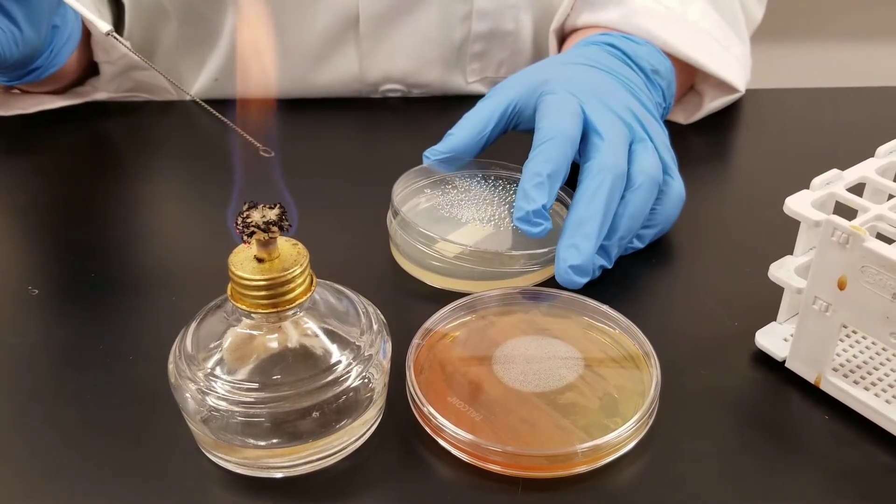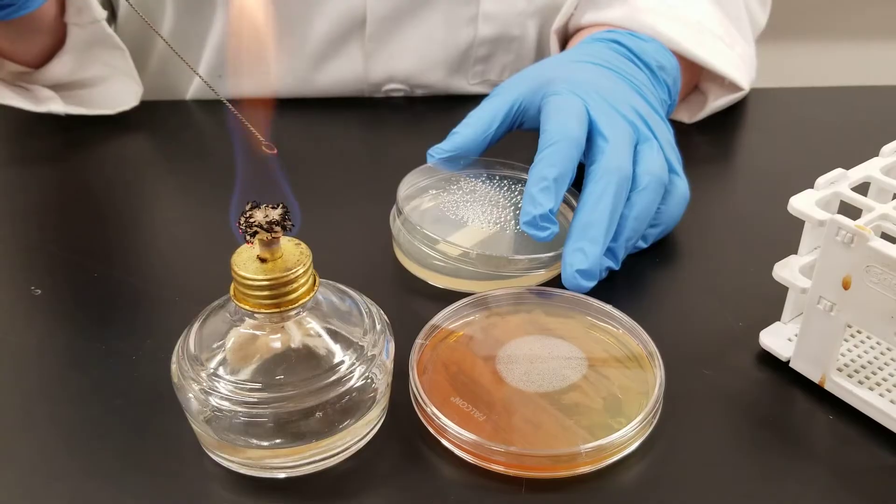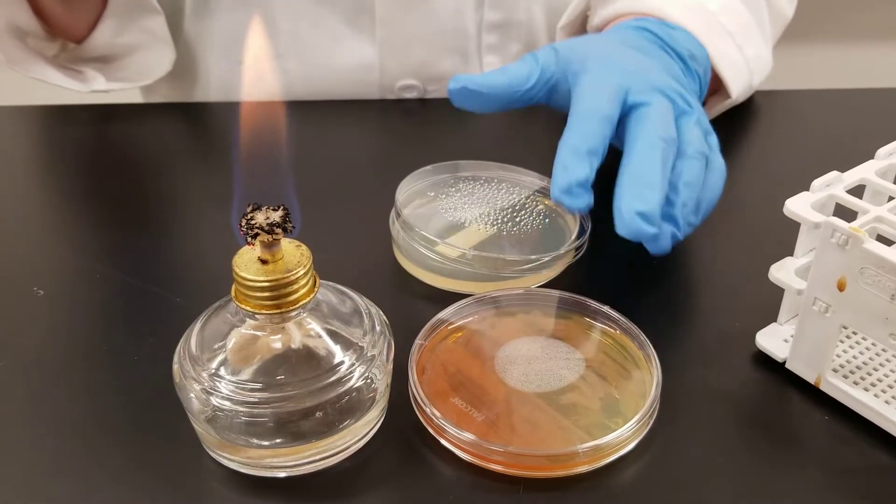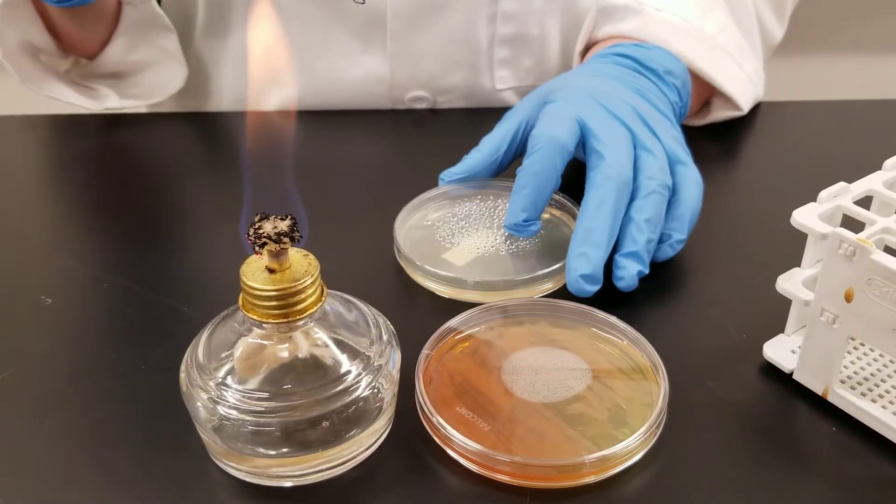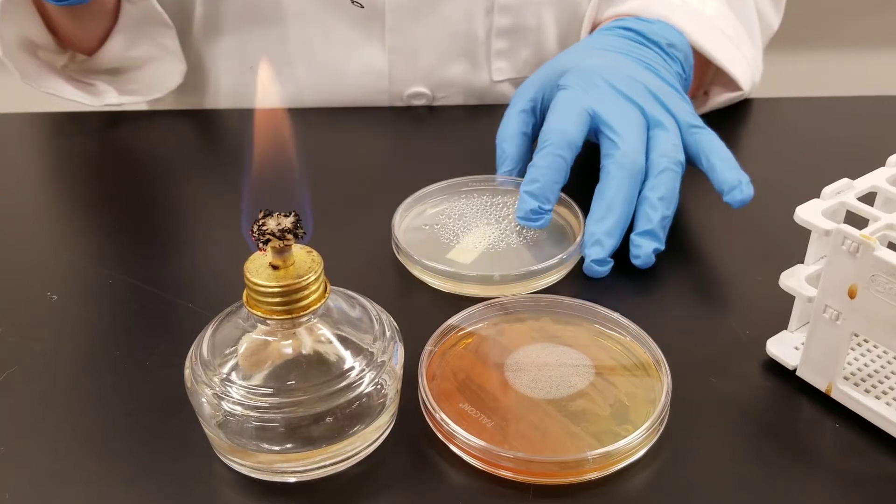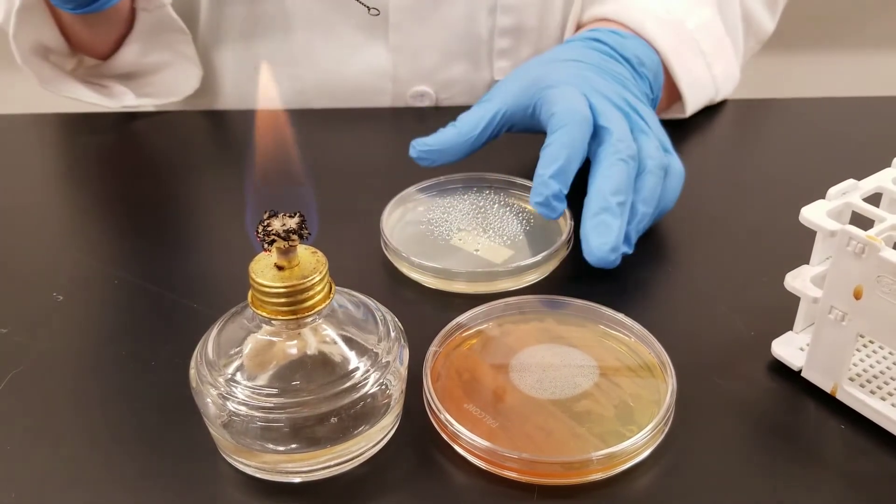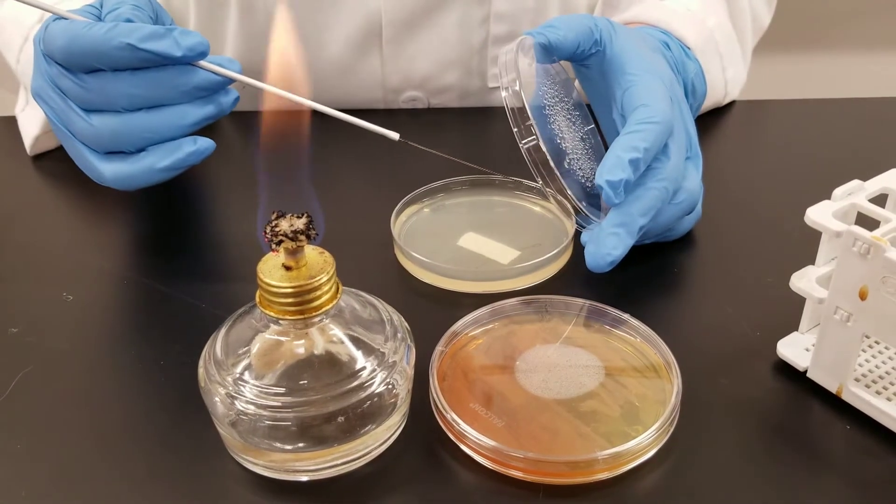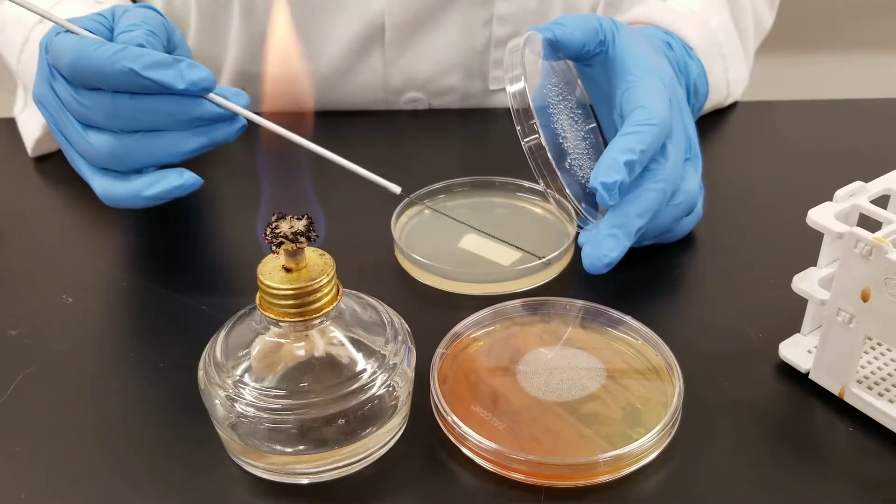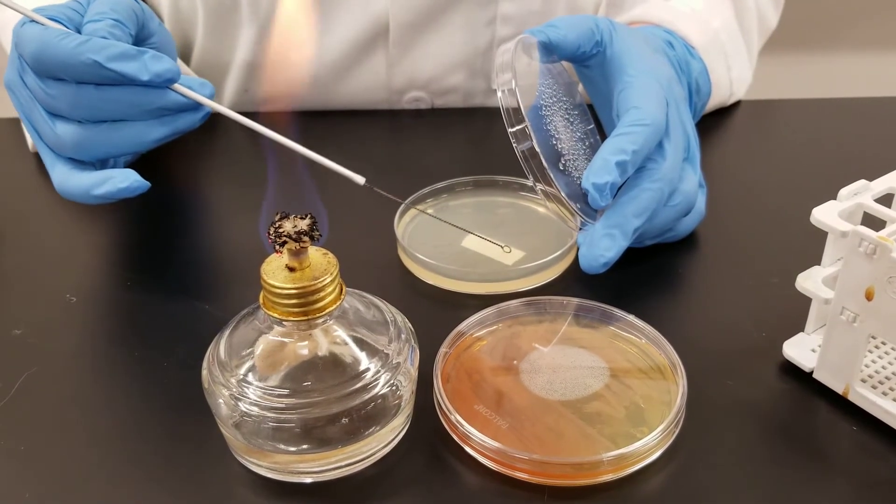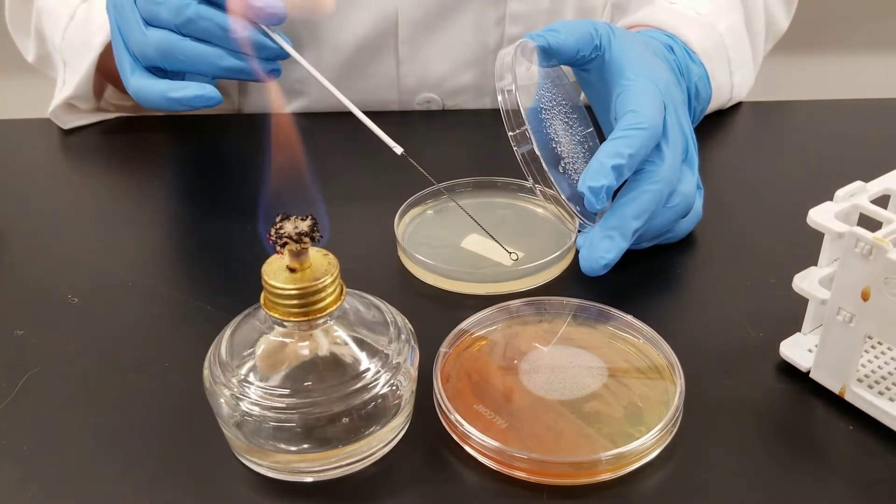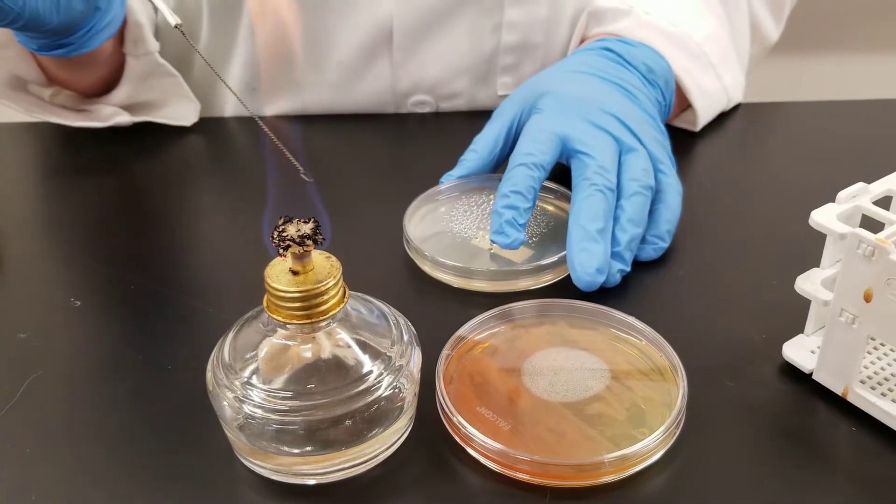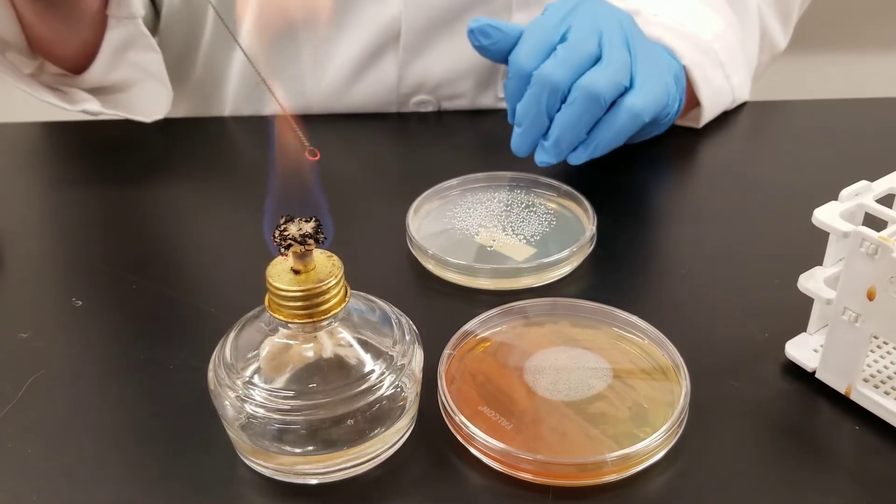Now I'm going to flame my loop. Let it cool. I do not go back into the stock plate. I'm going to go back into the area that I just streaked. That is where my inoculum is. You may want to turn the plate a little 90 degrees to help you with that. Go into the area you just streaked. That is where you're pulling your inoculum from. Streak out. Now I flip the loop over at this point. Go into that second quadrant area and streak out. The idea is you're diluting the bacteria out so at the end you will have isolated colonies.